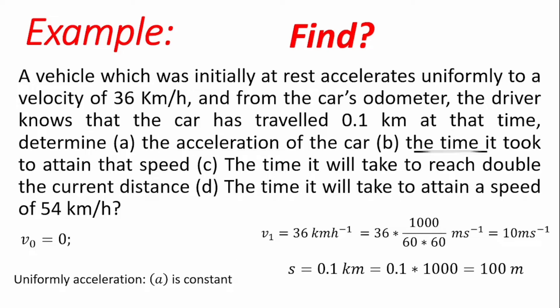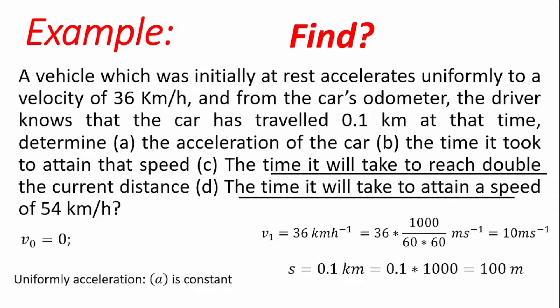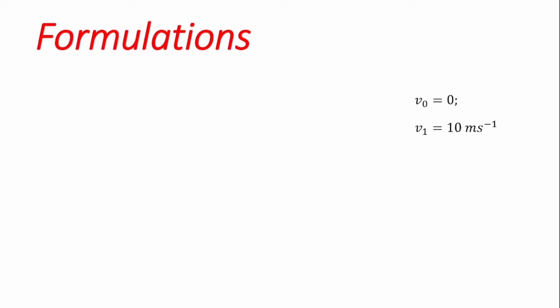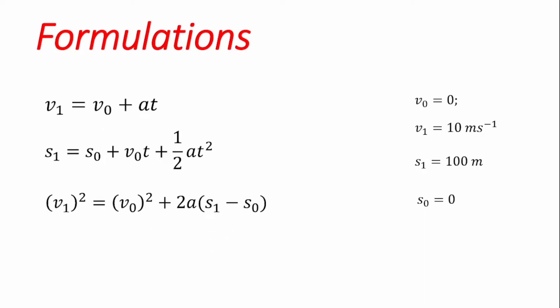Then we are to find the time it took for the vehicle to attain that speed of 10 m per second. After that, we look for the time it will take the vehicle to reach double the current distance — that's two times the distance we currently have, which is 200 meters. Finally, we look for the time it will take to attain a speed of 54 km per hour. To work through this problem, we need to itemize our parameters: the initial velocity, the final velocity, the position it reaches, the initial position which we take as zero, and all the formulas useful for solving problems involving uniformly accelerated motion.